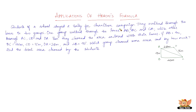The question here goes like this: Students of a school staged a rally for a cleanliness campaign. They walked through the lanes in two groups. One group walked through the lanes A, B; B, C; and C, A.